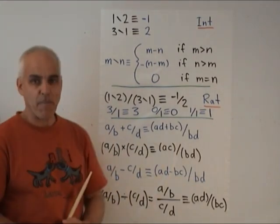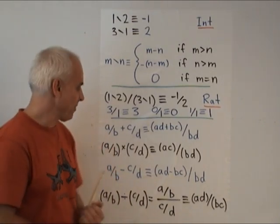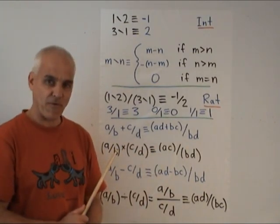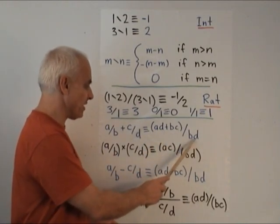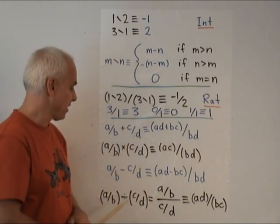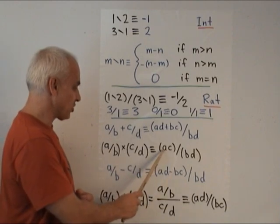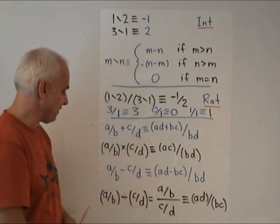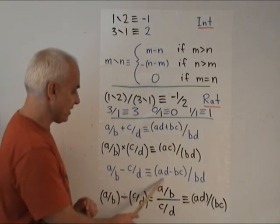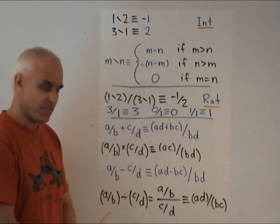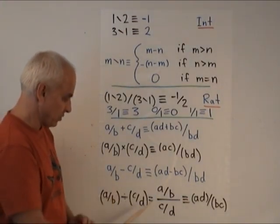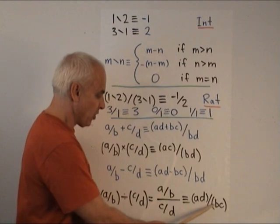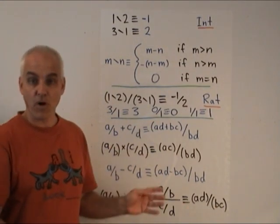Now we can define the main operations for rational numbers. First of all, addition. If we have a over b plus c over d, then we use exactly the familiar form for fractions. The sum is defined to be ad plus bc over bd. The product, a over b times c over d, is by definition a times c over b times d. And then the inverse operations, subtraction and division, are easily obtained. a over b minus c over d is ad minus bc over bd. And a over b divided by c over d is equal to a times d over b times c.